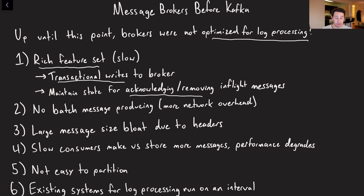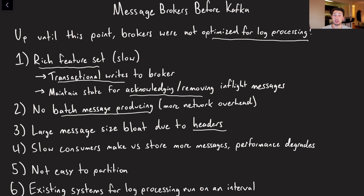It's going to complicate things and degrade performance. Number two is that none of these brokers had a batch message production API to reduce the amount of network overhead for publishing. Number three is that there were a lot of headers per message just in the JMS specification, and as a result this would bloat the message size.